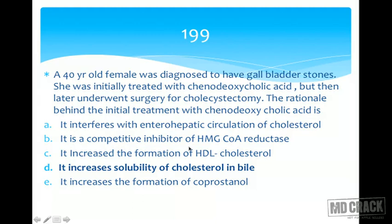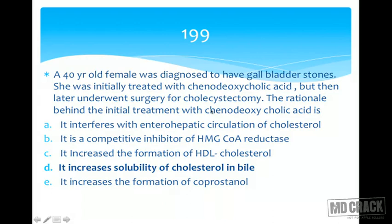Competitive inhibitors of HMG-CoA reductase are statins like lovastatin — not chenodeoxycholic acid. Formation of HDL cholesterol is unrelated. Coprostanol is a fecal sterol from bacterial action on intestinal cholesterol, and increasing it does not help solubilize cholesterol in bile. Cholesterol's amphipathic properties are minimal due to the single hydroxyl group, so it is essential that chenodeoxycholic acid be given to increase its solubility in bile.